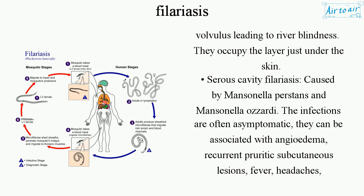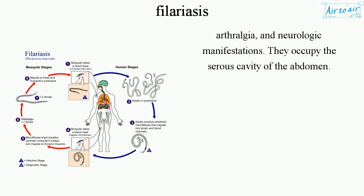Serous cavity filariasis, caused by Mansonella perstans and Mansonella ozzardi. The infections are often asymptomatic. They can be associated with angioedema, recurrent pruritic subcutaneous lesions, fever, headaches, arthralgia, and neurologic manifestations. They occupy the serous cavity of the abdomen.